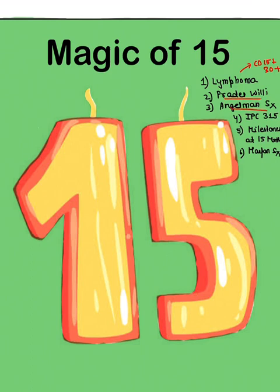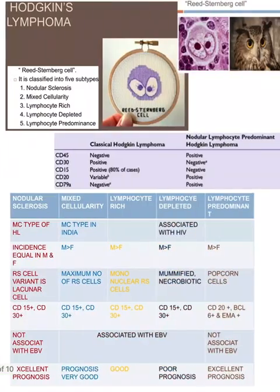We also have two micro-deletions: Prader-Willi and Angelman. The mnemonic: PPD — papa's reason is deleted for Prader-Willi; angel mamma's reason is deleted for Angelman. Then IPC Section 315, milestones a child attains at 15 months in pediatrics, and Marfan syndrome where there is a defect on chromosome 15 in the FBN1 fibrillin gene. Let's get started with the magic of 15 series!